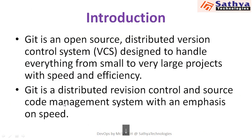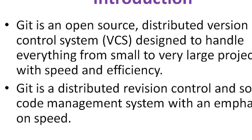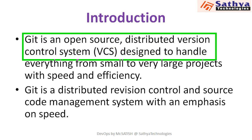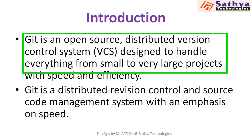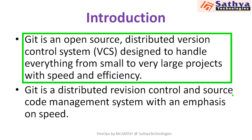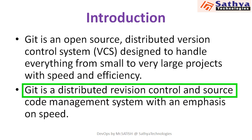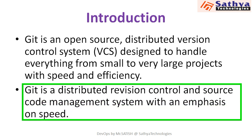If you go with the distributed version control system like Git, Git is an open source distributed version control system designed to handle everything from small to very large projects with speed and efficiency. Compared to SVN, Git performance is high. Git contains its own local repository so it can maintain the code. Git is a distributed version control and source code management system with an emphasis on speed.